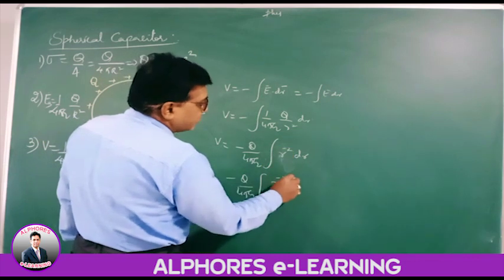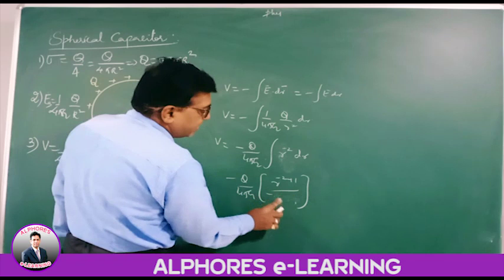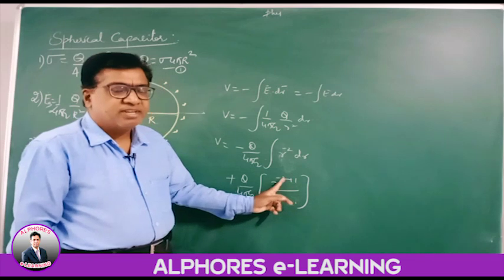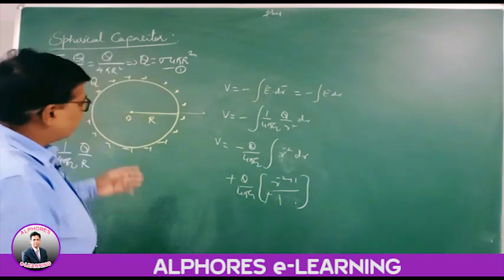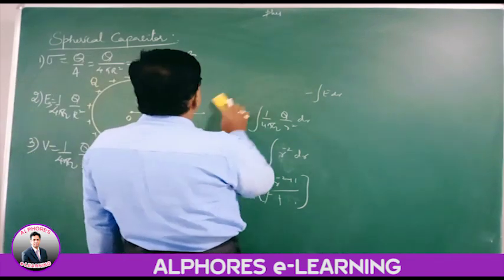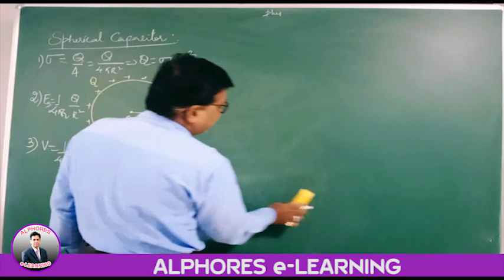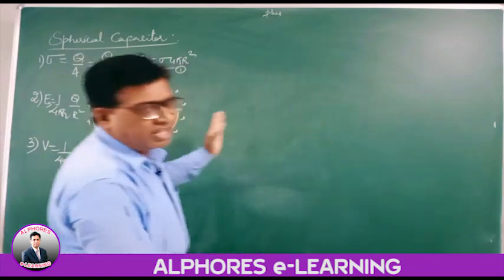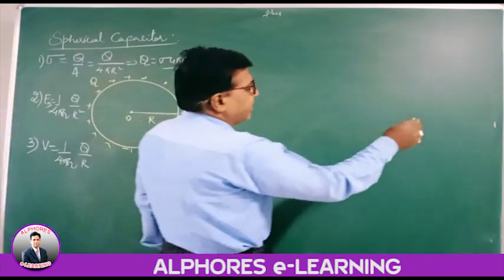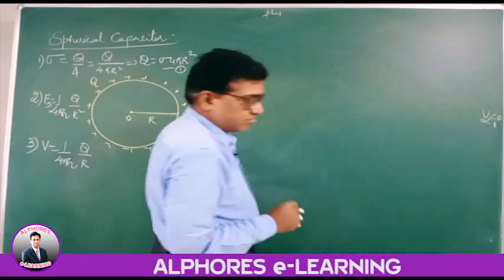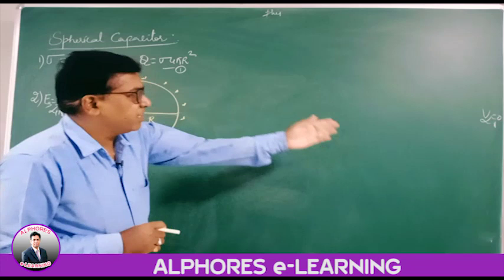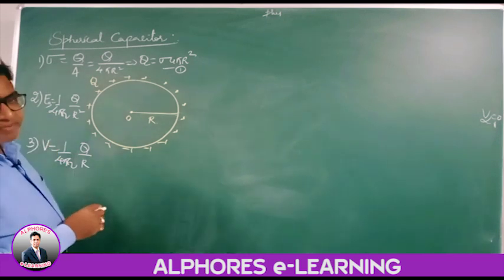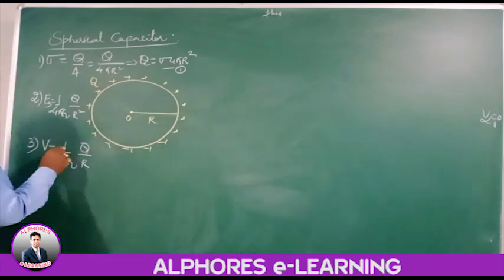Integrating: −Q/4πε₀ × R⁻² integrated gives R⁻¹, so V = Q/(4πε₀R). We are moving the charge from infinity to the surface. At infinity the potential due to any charge is zero. So the potential on the surface — the work done per unit charge in storing a charge — is V = (1/4πε₀) × Q/R.